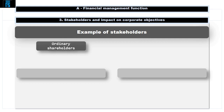Ordinary shareholders are also called equity investors. They own the company and take on the most risk. Shareholders take a higher risk by investing their money in a company rather than leaving it on deposit in a bank. Therefore, they expect a higher return than the returns offered by risk-free investments. Their main objective is to maximise the value of their investment, be that through dividend income or increasing share value. They have long and short-term objectives.